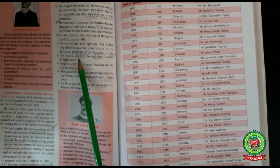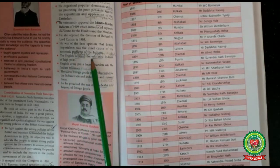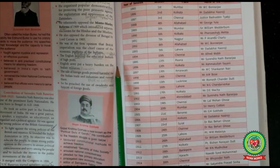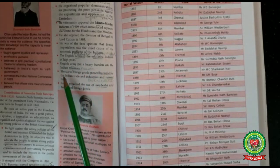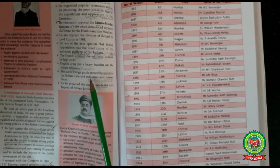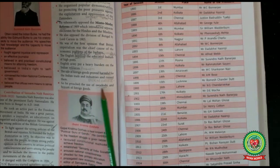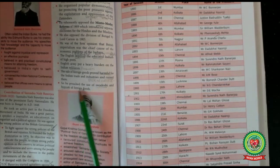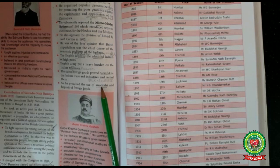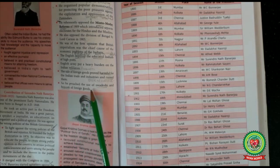The English deprived educated Indians of high posts and the English army put a heavy burden on Indian resources. The sale of foreign goods proved harmful for Indian trade and industries and ruined them. Therefore, he preached the use of Swadeshi — using goods made in your own country — and the boycott of foreign goods, meaning saying no to foreign goods.